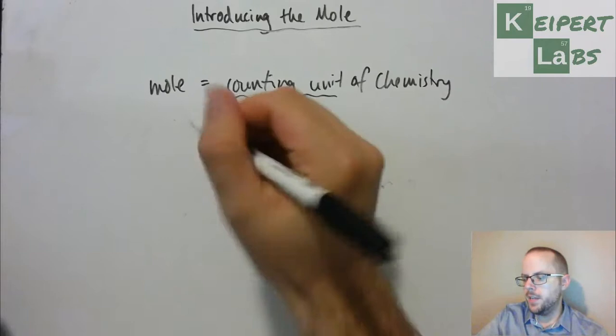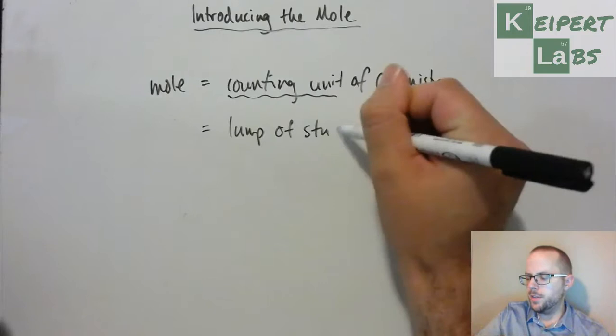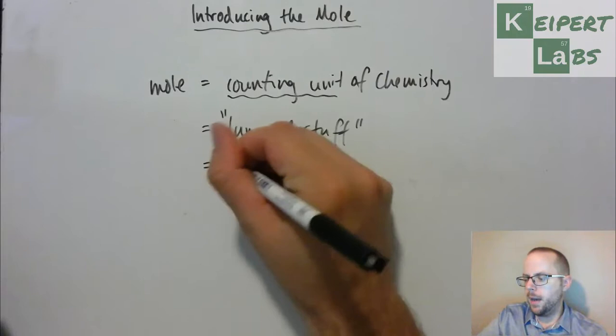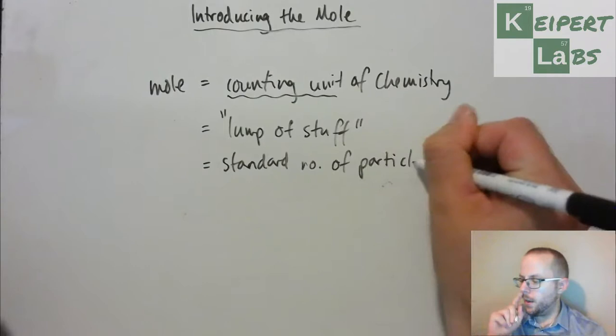And so, what we say is that the mole represents a certain amount of matter. That is, it's Latin for lump of stuff. When we looked at the term molecule, we talked about it in terms of little lump of stuff. This is the big version, the lump of stuff. So it represents a standard number of particles.